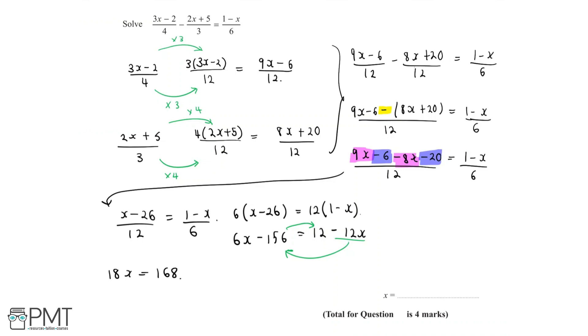And now to find x, we divide both sides by 18. So 168 divided by 18 is 28 over 3. And so we've found our final answer that x is equal to 28 over 3.